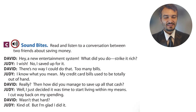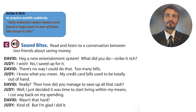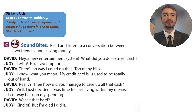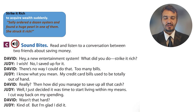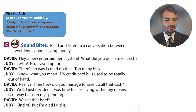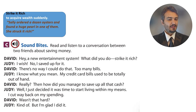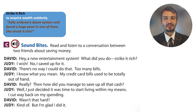David is basically kidding. Judy says: 'I wish, but no — I saved up for it.' There is no easy money, no quick money — she saved for it. David continues: 'What? There's no way I could do that — too many bills.' Judy says: 'I know what you mean. My credit card bills used to be totally out of hand.' 'Out of hand' means not under control — something that goes beyond your control.